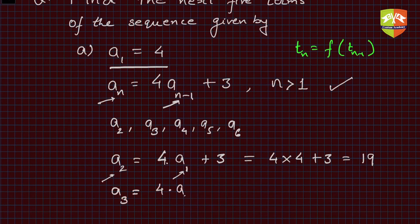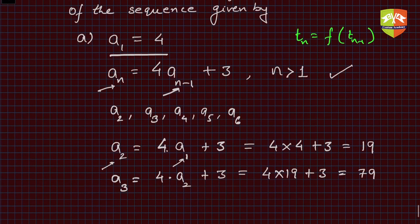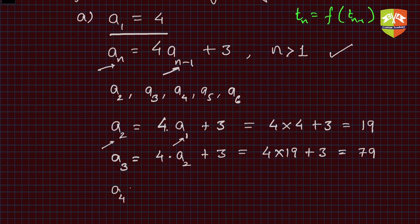What about a3? a3 is 4 times a2, the previous term, and then add 3 to it. So 4 times 19 plus 3. 4 times 19 is 76, 76 plus 3 is 79. I hope you are getting this.